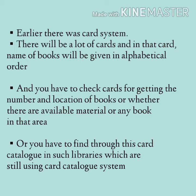Earlier, there was a card system. There would be many cards, and in those cards the names of books were given in alphabetical order. You would check the cards to get the location of books, whether there was available material in the area you wanted to search. Some local libraries are still using the card catalog system.